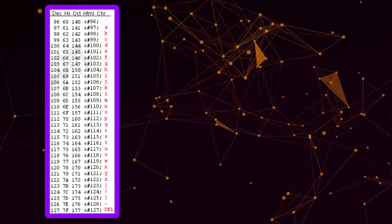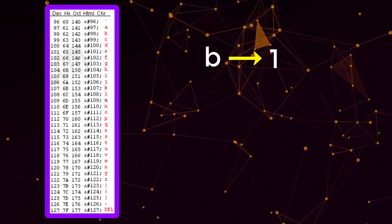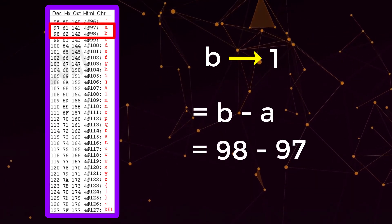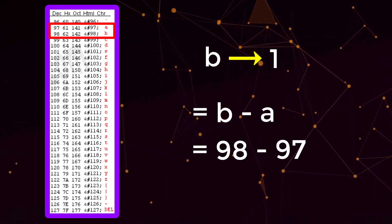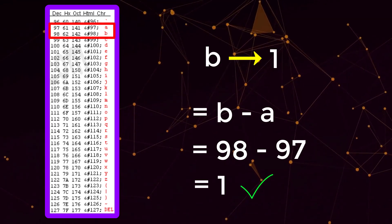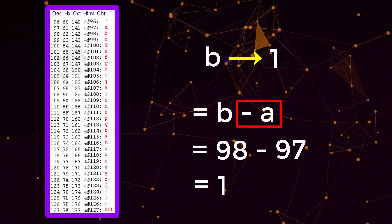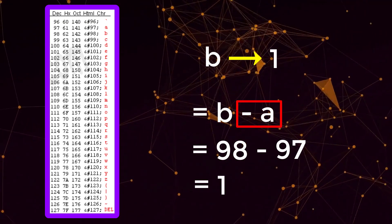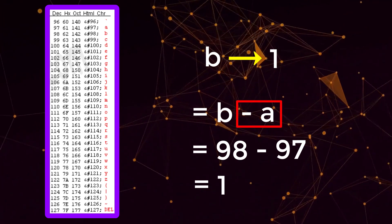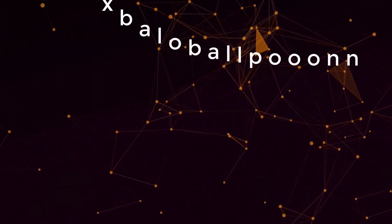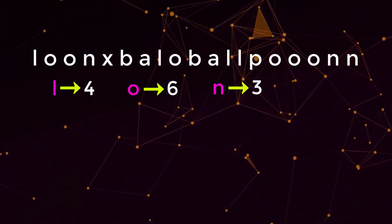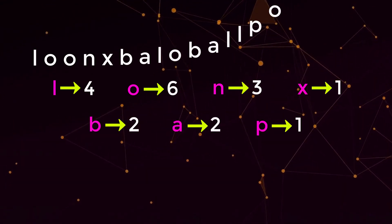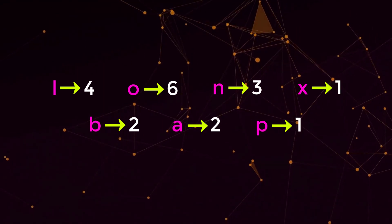So for example, let's say we want to map lowercase character b to index one. If we do b minus a, that would be 98 minus 97, which equals one. So as you can see, the way we get our index is we subtract the lowercase letter from a, and that will always give us the appropriate index in the range of zero to 25. So if we loop through all characters in our string, we just have to subtract each character by the character a, and then we'll increase the count at that index.